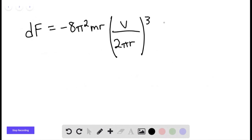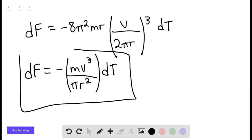quantity cubed times dt, and then we can say df would be equal to negative mv cubed over pi r squared multiplied by dt. This would be our final answer for part c, the change in the force with respect to the period in terms of the velocity.